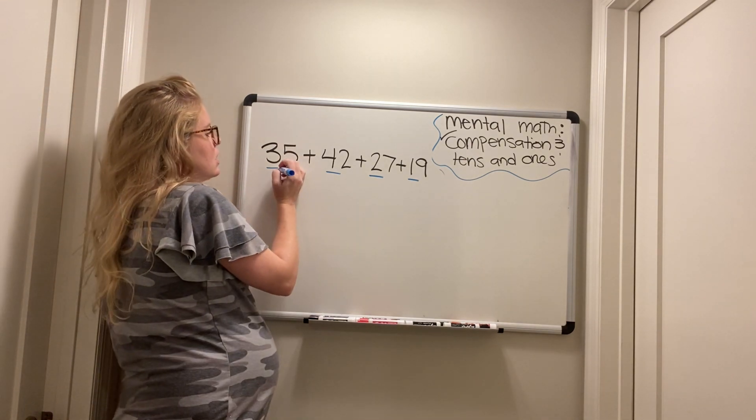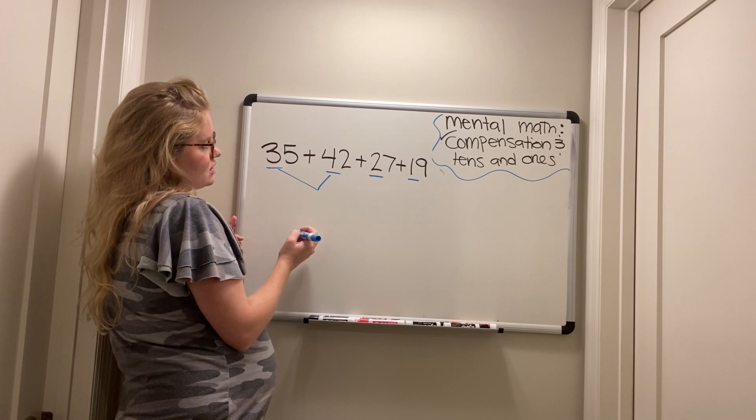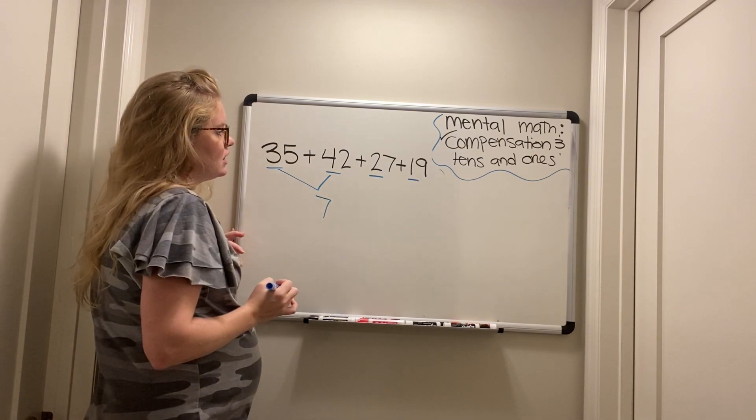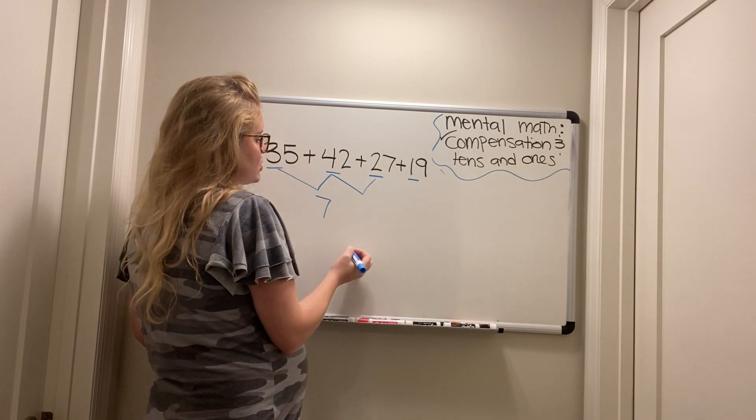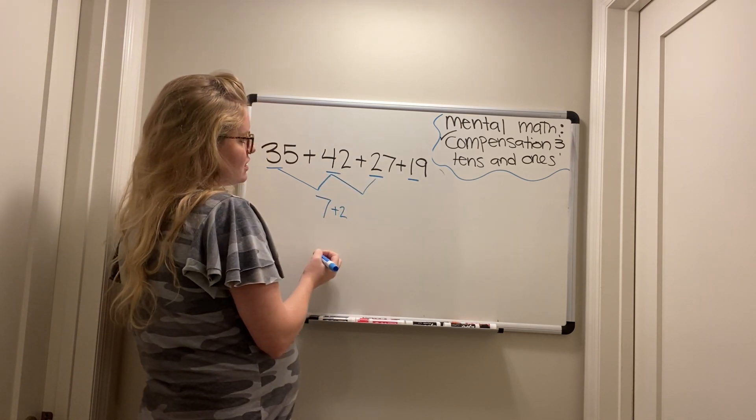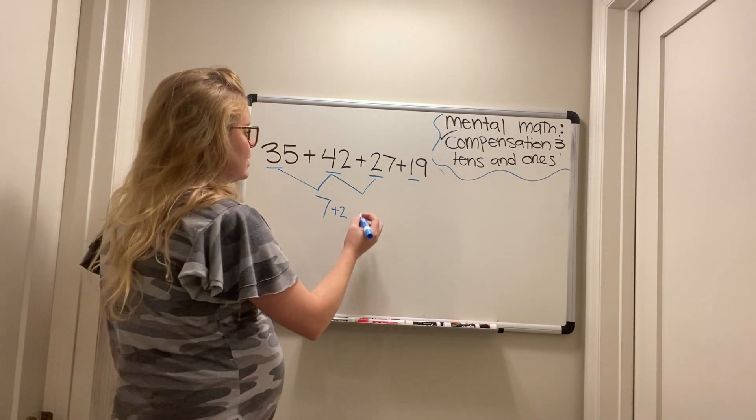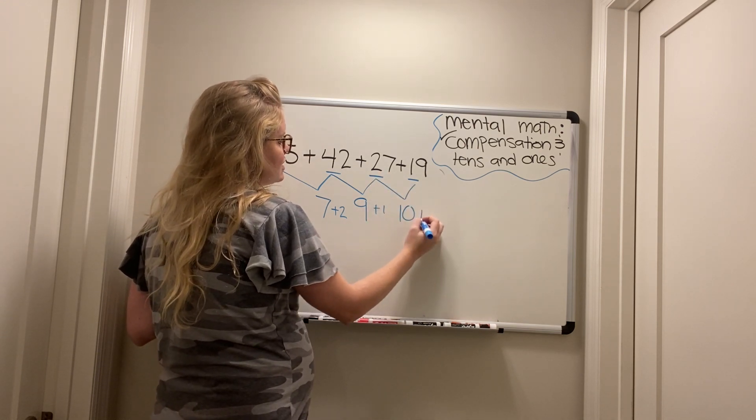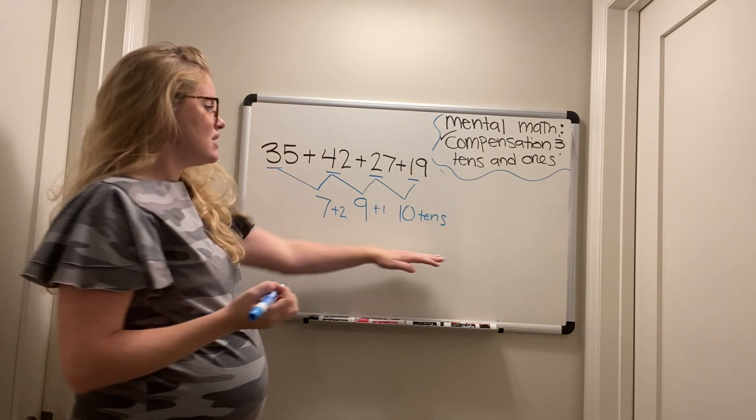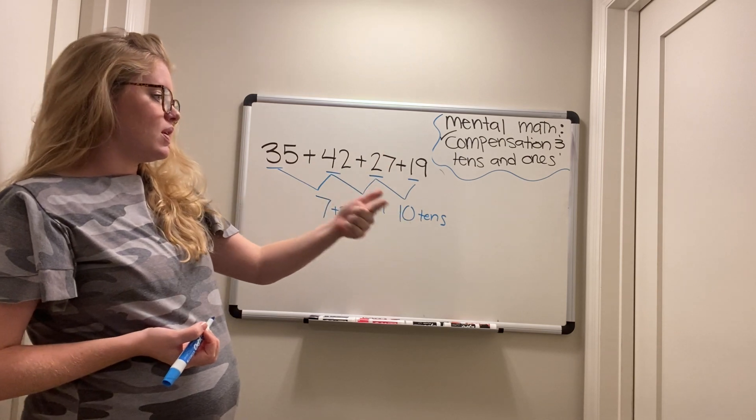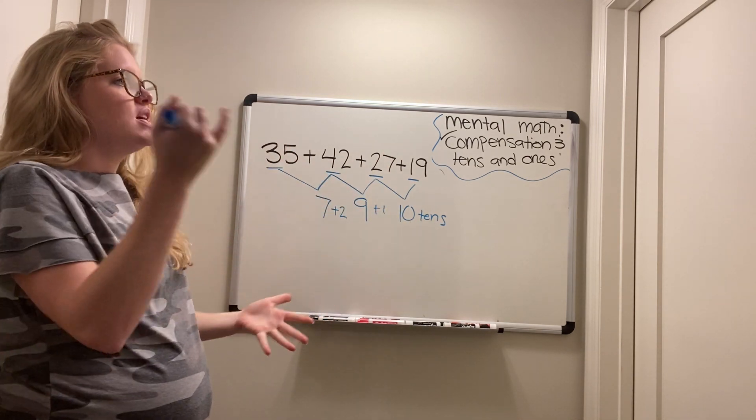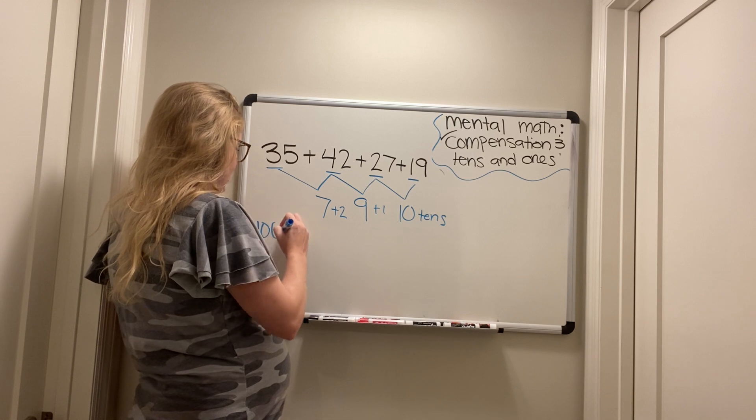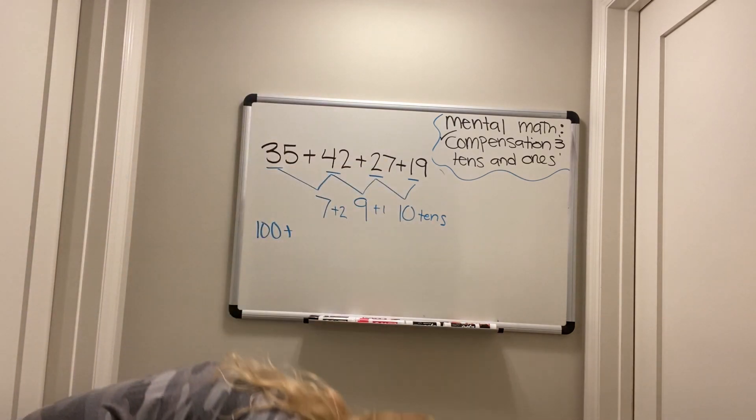So three tens plus four tens is how many tens? That's right. It's seven tens. All right. Seven tens plus two tens is how many tens? That's right. Nine tens. Nine tens plus one ten is 10 tens. Now scholars, what does 10 tens actually mean? 10, 20, 30, 40, 50, 60, 70, 80, 90, 100. Good. So out of all the tens, we have 100. All right. So we're done with the tens for now.